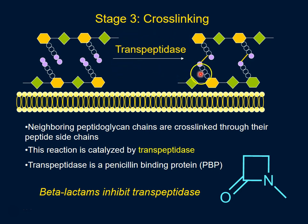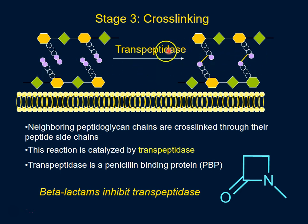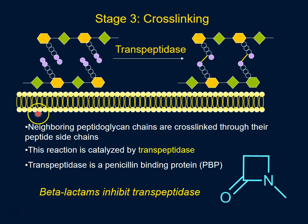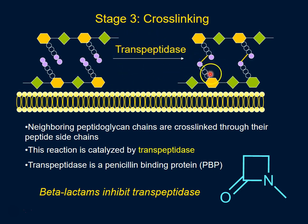An enzyme known as transpeptidase creates a cross-link between neighboring amino acids, and now we have these two polymers that are linked, forming a very strong cell wall. Transpeptidase, which catalyzes this cross-linking, is also known as a penicillin-binding protein.